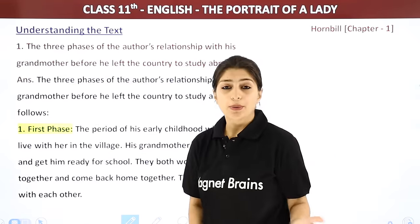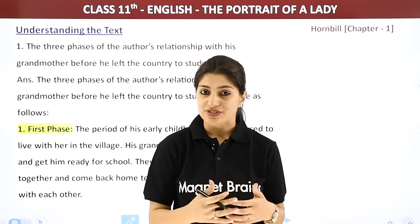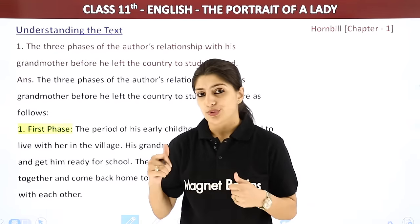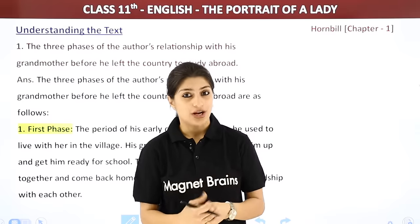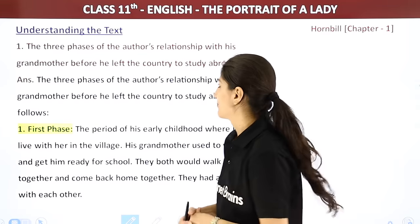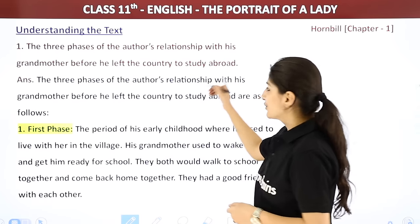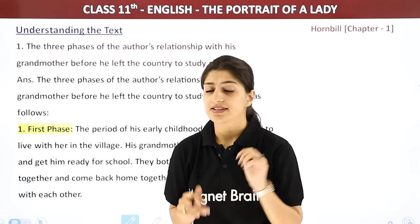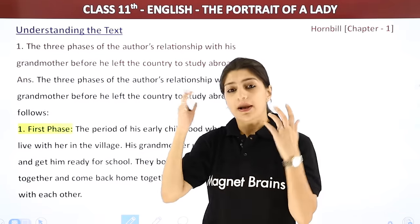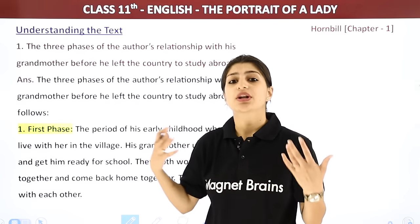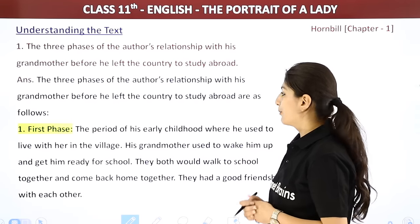So this was all about the summary of the chapter The Portrait of a Lady. Now we will cover some important comprehension questions and answers, which have higher chances of appearing in exams. These questions also cover the entire chapter, so any remaining doubts will be cleared. The first question is: What are the three phases of the author's relationship with his grandmother before he left the country to study abroad?